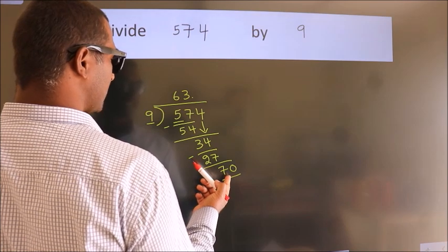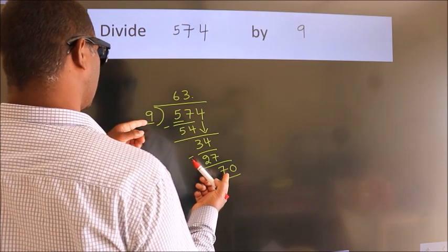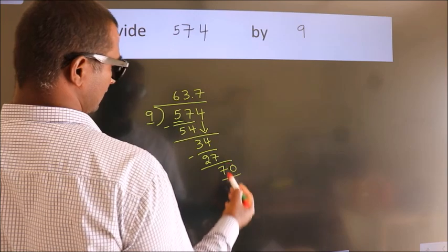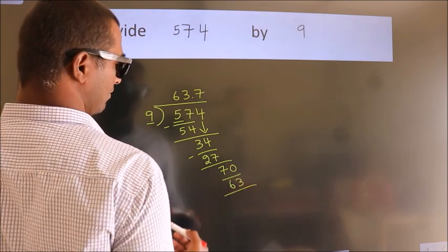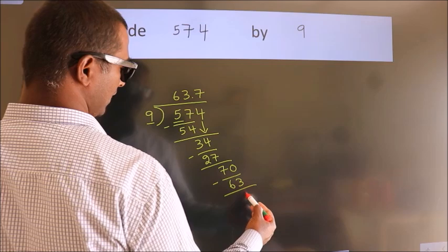A number close to 70 in 9 table is 9, 7, 63. Now, we subtract, we get 7.